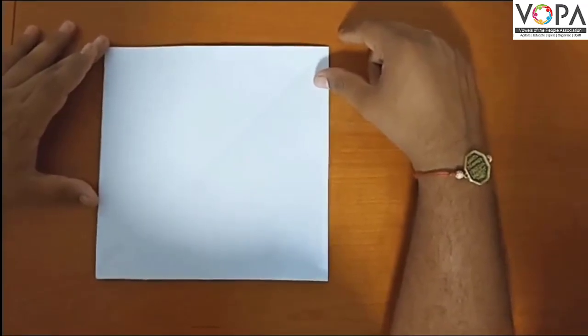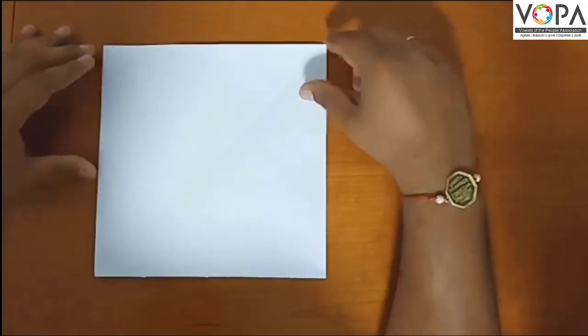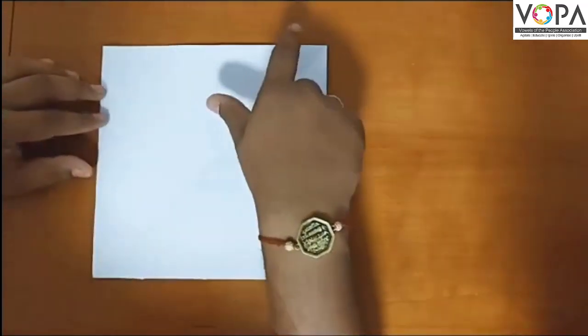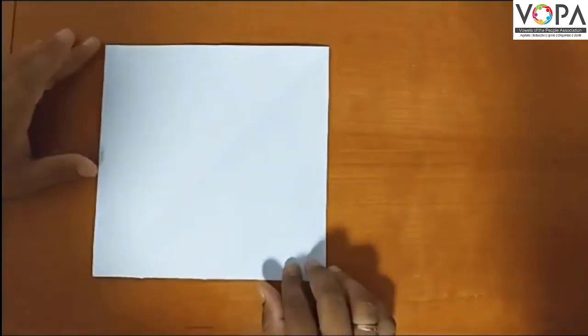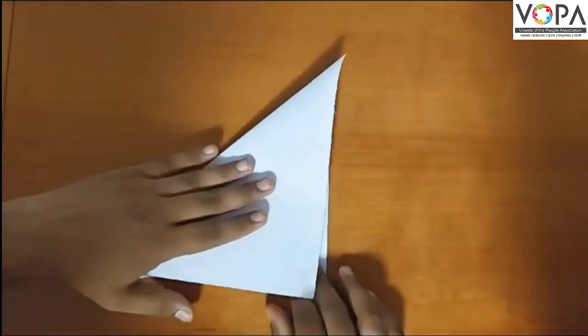How to create a simple paper boat: you have to take a square paper and fold it halfway in this way.